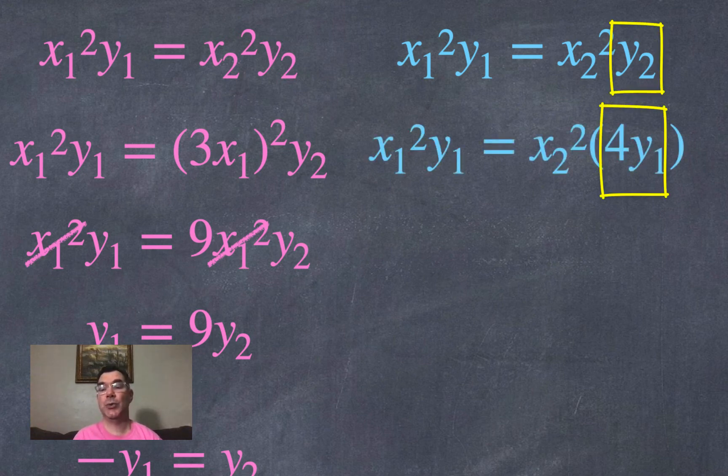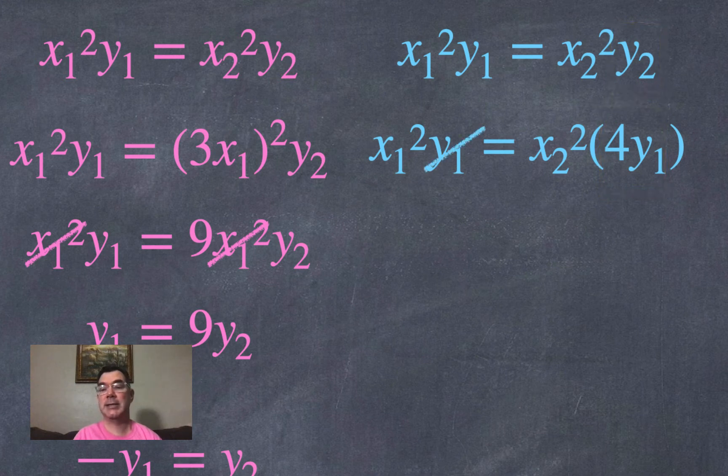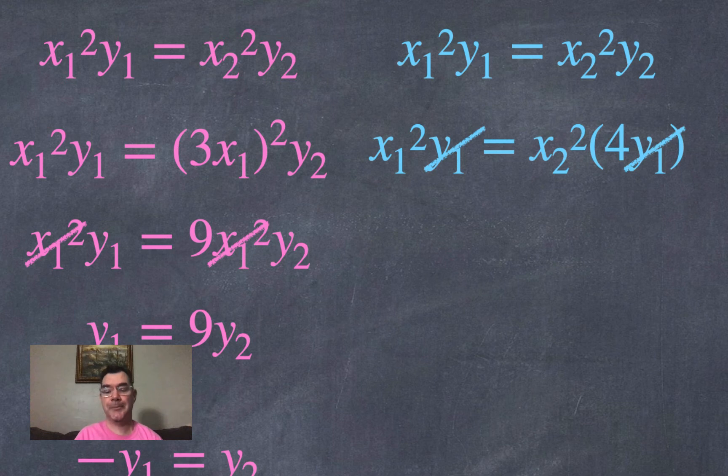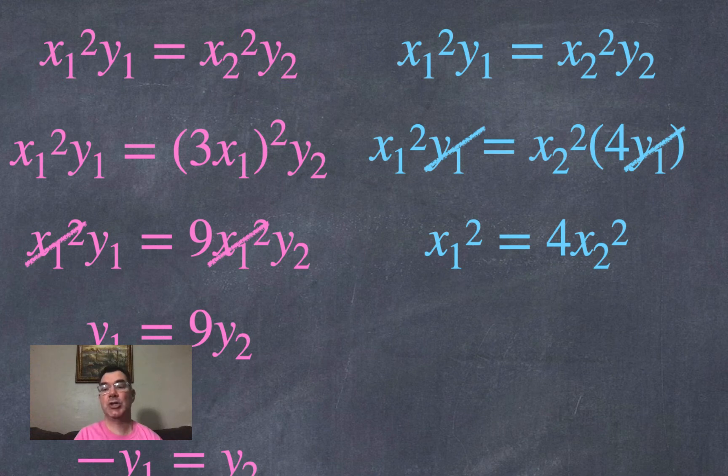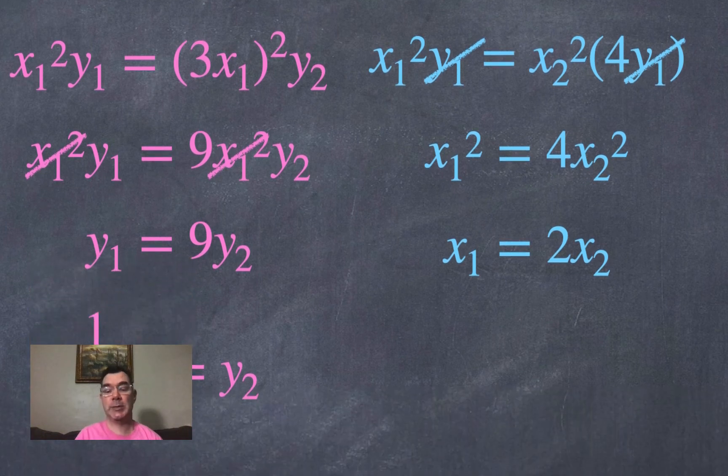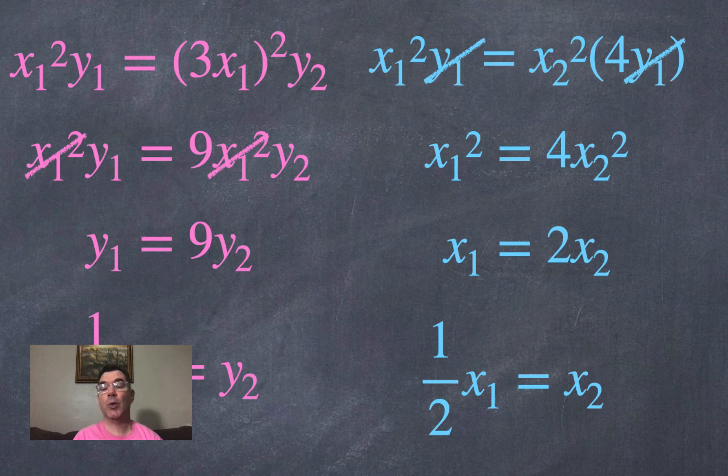I don't really need to expand any parentheses but I can divide out the y₁s on each side. So I get that x₁ squared is going to equal 4 times x₂ squared. If I square root both sides I get that x₁ would equal 2 times x₂, and then solving for x₂, x₂ would equal 1/2 times x₁.